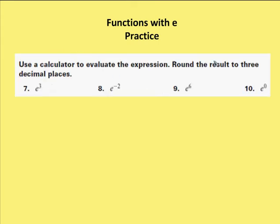We're going to use a calculator to evaluate the expression and round the result to 3 decimal places. So, you should have a calculator handy. I have e, and I'm going to take that to the 3rd power. That gives me a result of about 20.086.